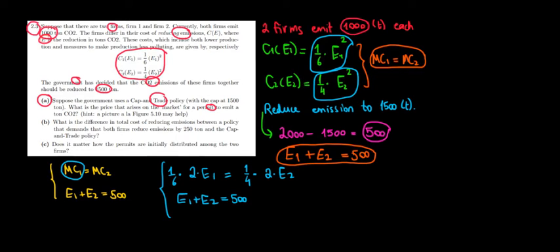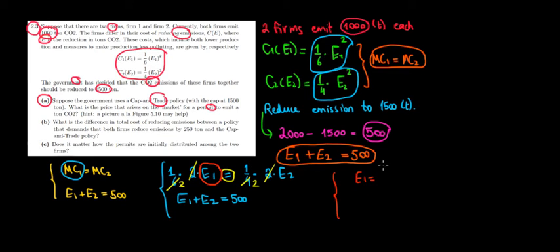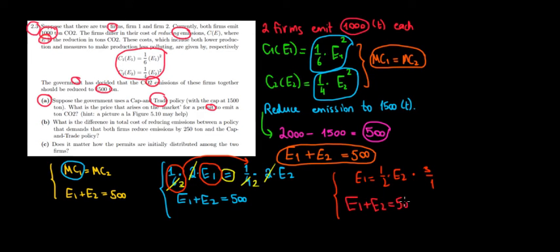We can cancel terms in the marginal cost equation. Simplifying (1/3)E1 = (1/2)E2, we can express E1 in terms of E2. Keeping E1 on one side and dividing by (1/3) — which means multiplying by 3 — we get E1 = (1/2) × E2 × 3, so E1 = (3/2)E2. We also retain the condition E1 + E2 = 500.